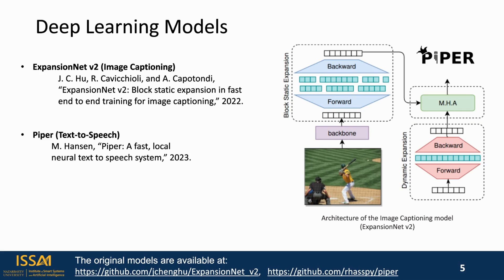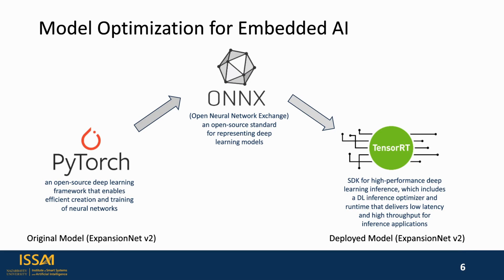The output of the ExpansionNetV2 model is passed to Piper, which is a fast, local neural text-to-speech system supporting multiple languages, including Kazakh. In real-time machine learning model deployment, the efficiency of model inference is critical. The common deep learning frameworks such as PyTorch are not particularly optimized for low-latency inference applications on edge devices.